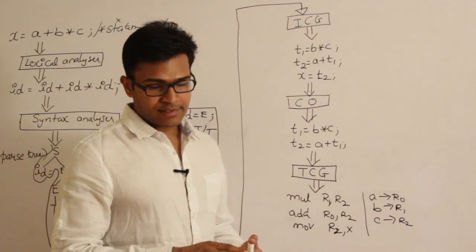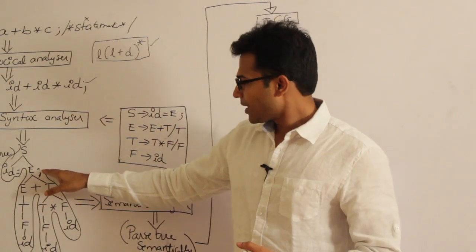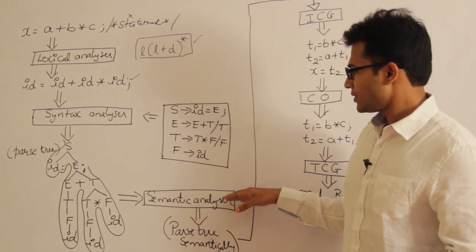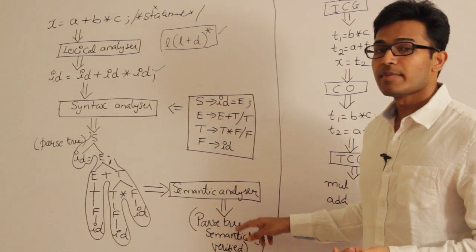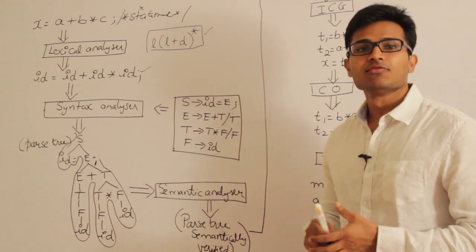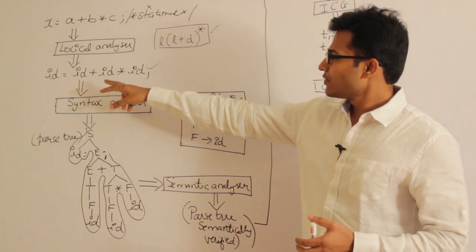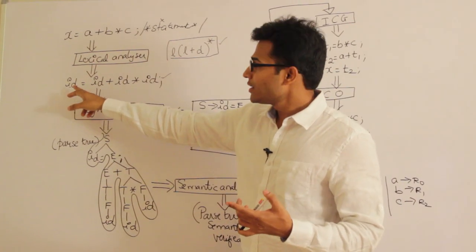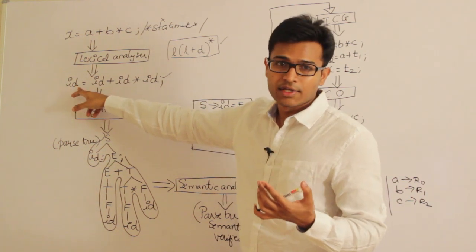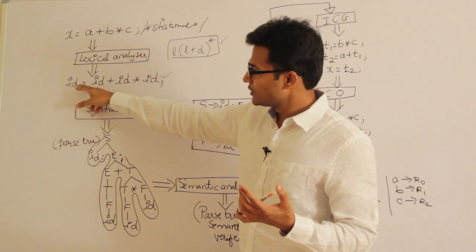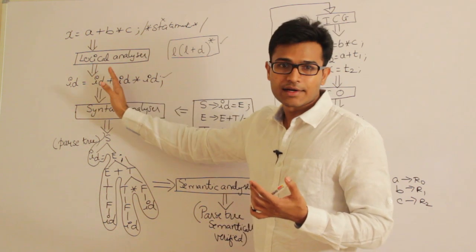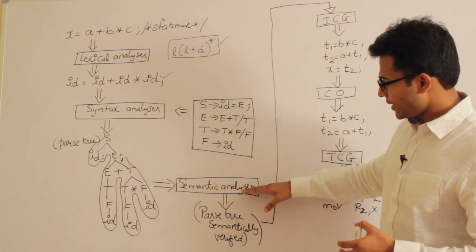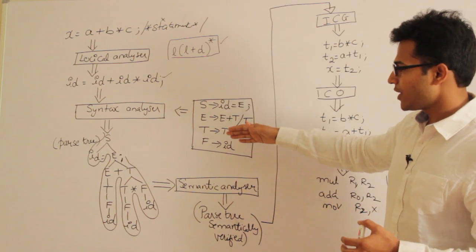The output of the syntax analyzer is a parse tree. This parse tree will be given to the semantic analyzer. The semantic analyzer is going to take the parse tree and verify it semantically — meaning whether it is meaningful or not. For example, the left-hand side has to be a variable; it cannot be a constant, a function name, or an array name. The left-hand side has to be a variable compatible with the type of the right-hand side. All such type checkings are done at the semantic analyzer. The output is a semantically verified parse tree.